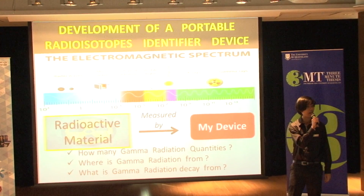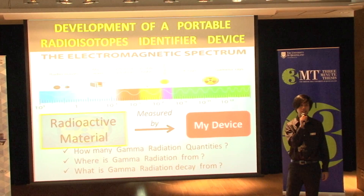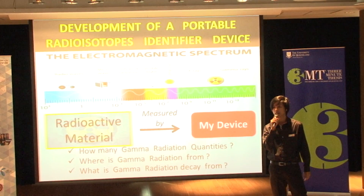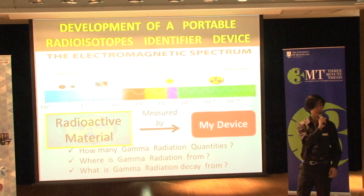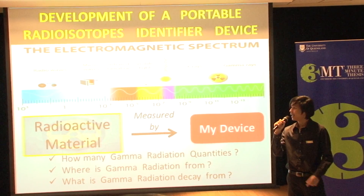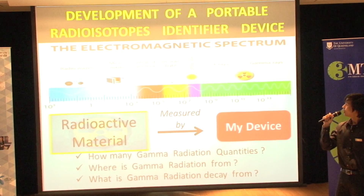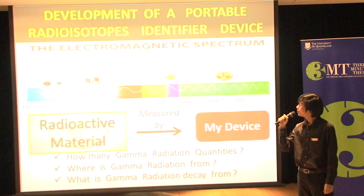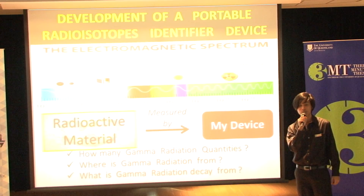First of all, I would like to introduce all of you in a simple word. Electromagnetic radiation is just a form of energy. Let's see the figure — it is the electromagnetic spectrum. The visible light is a type of energy, and we can see that. The electromagnetic waves exist everywhere and they are very useful.